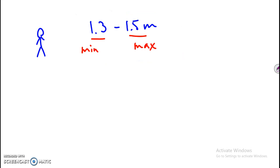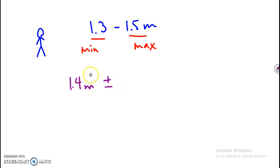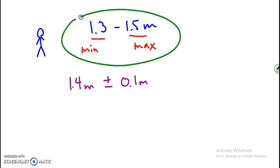So what would you say is my height if you had to write it down? You would probably choose the central value, and as the uncertainty you would say 0.1, because that's how much you have to add or subtract to get back to these extremes.